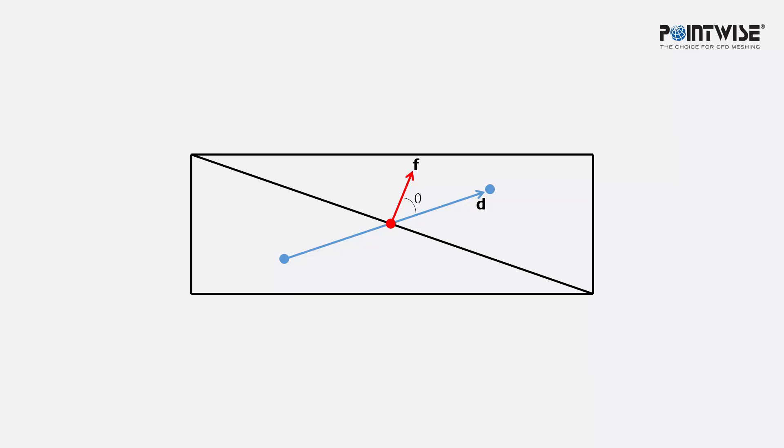So what is cell non-orthogonality? It's equivalent to the non-orthogonality metric computed by OpenFoam when you run CheckMesh.